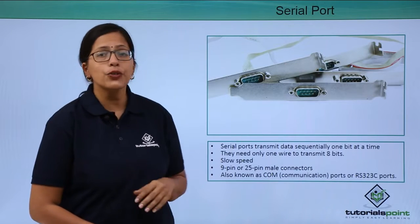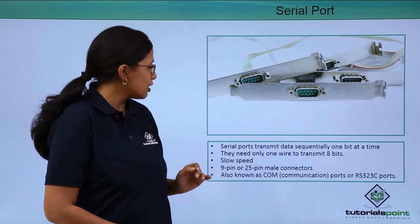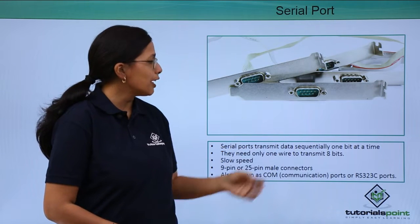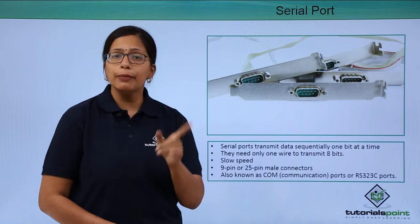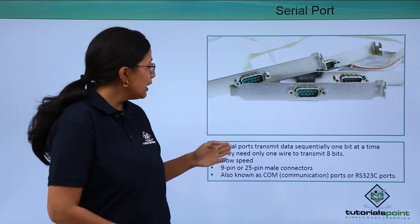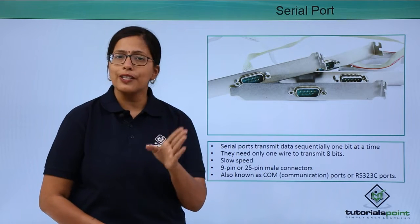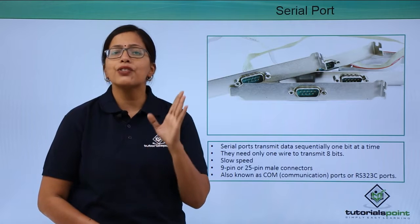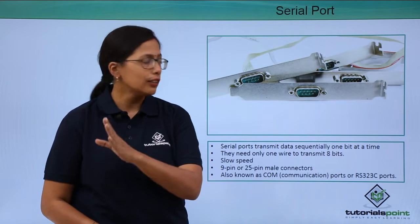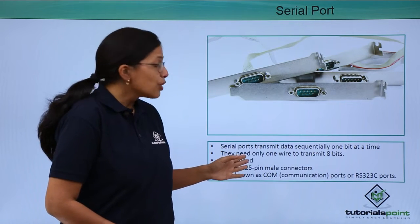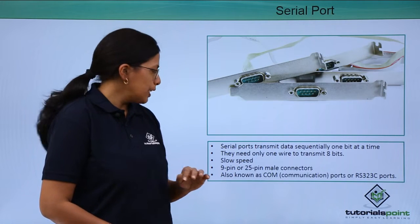Let's first start with the serial port. As the name suggests, serial ports transmit data sequentially, one bit at a time. They need only one wire to transmit 8 bits because they are transmitting only one bit at a time. Because of this, they have very slow speed as well.